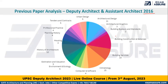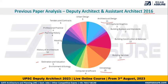Even here, if you see the maximum number of questions are again from Climatology and Architectural Design — 11 questions. This time you have more questions from Building Construction, Building Services, and the same for History of Architecture. And then the rest of the subjects like Environment, Estimation, Planning, Tenders and Contracts, Urban Design, etc.